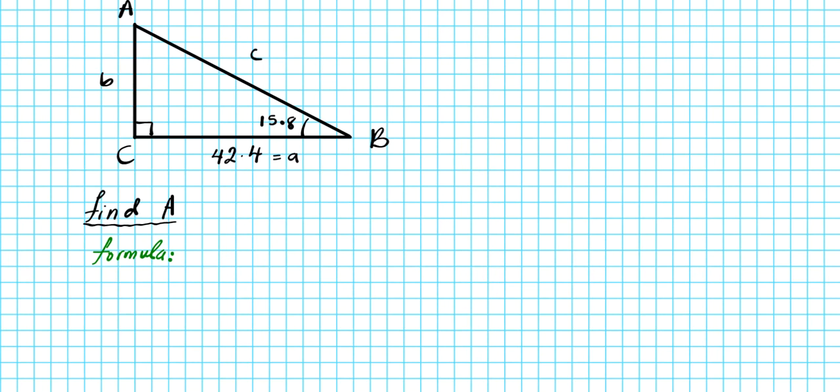The triangle angle sum theorem tells us that we have the following formula: angle A is equal to 180 minus the sum of the other two angles. So if we apply this particular formula to this scenario, we will have big A is equal to 180 minus uppercase B is 15.8 degrees plus uppercase C is 90 degrees.